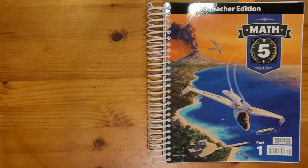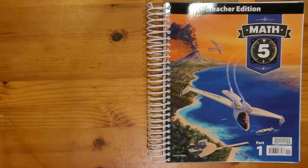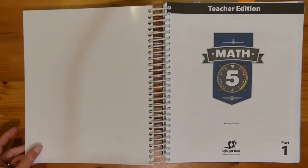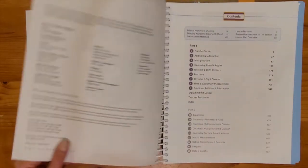This is the Math 5 teacher edition book. This is where I'm going to go to find my lesson to present to my child each day. You might notice that this says part 1. This is a two-part teacher edition. Part 1 will cover chapters 1 through 9 and part 2 will cover chapters 10 through 18.